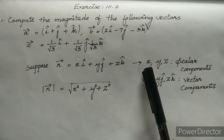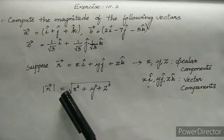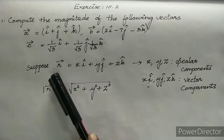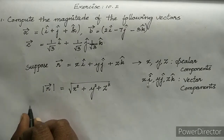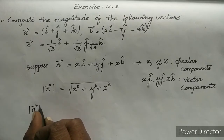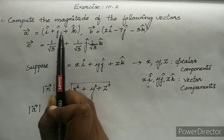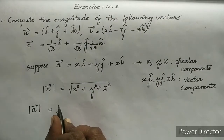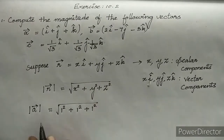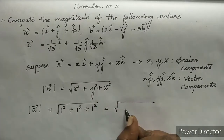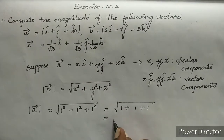The scalar components are X, Y, Z. So sum of squares of scalar components, that is √(X² + Y² + Z²), will be the magnitude of R vector. So the magnitude of our A vector — we write it between bars — is equal to the scalar components of A vector being 1, 1, and 1. So we write √(1² + 1² + 1²). Since 1² = 1, we get 1 + 1 + 1 = 3, so the magnitude is √3.